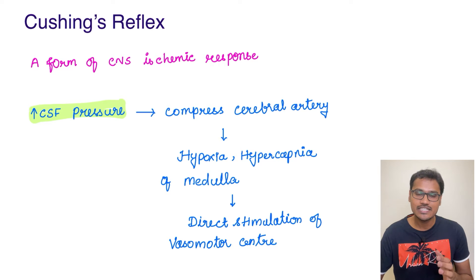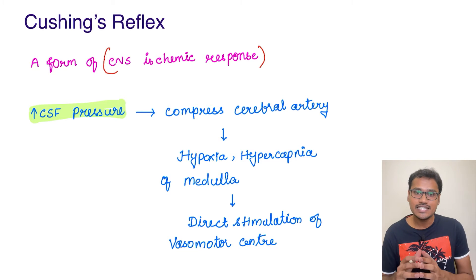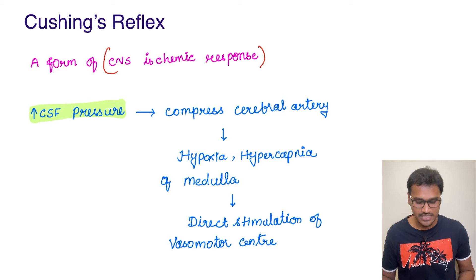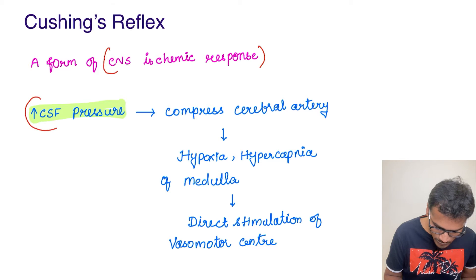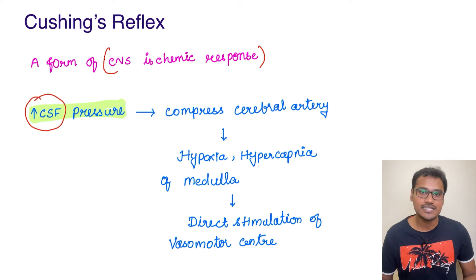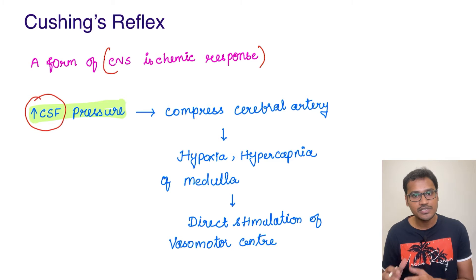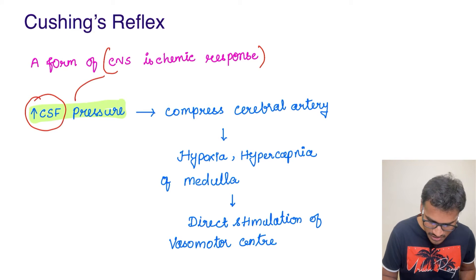This Cushing reflex is a form of CNS ischemic response. Whenever CNS ischemia is happening due to the raised CSF pressure, the cerebrospinal fluid pressure increases and this compresses the cerebral vessels leading to ischemia. This is called Cushing's reflex.